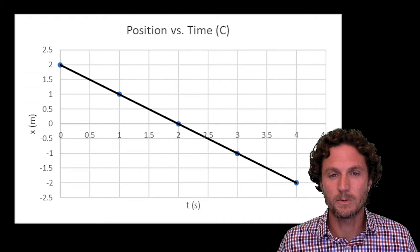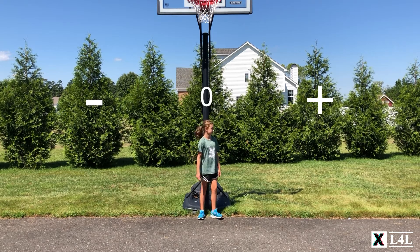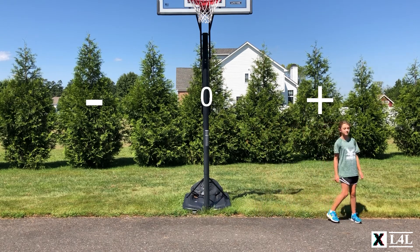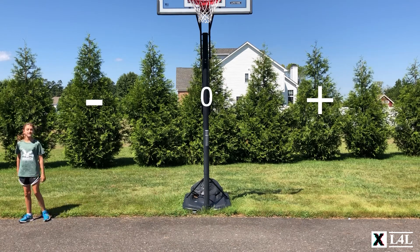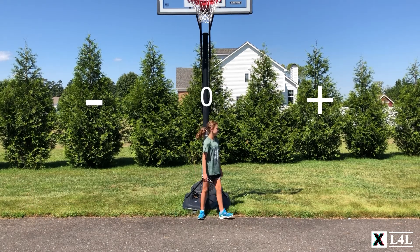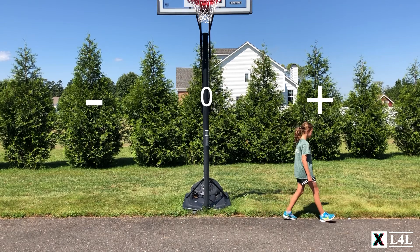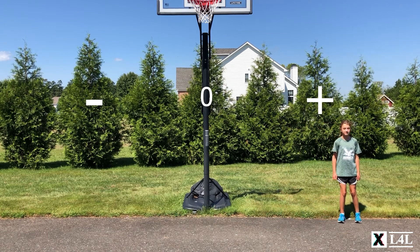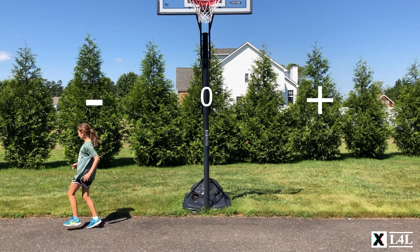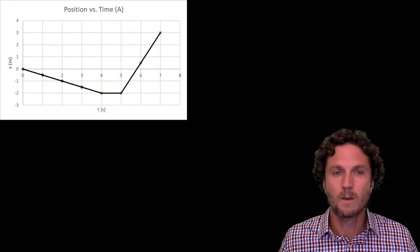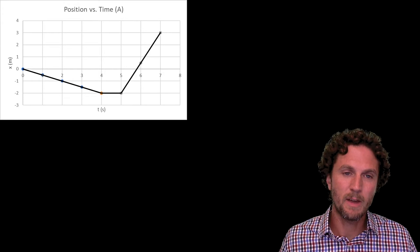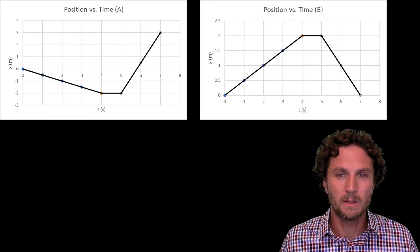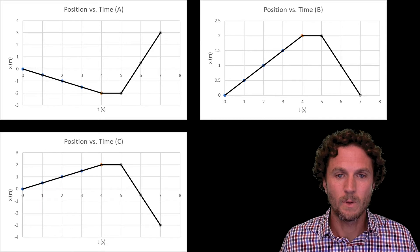Let's take a look at another example of some motion. Was Madison's motion best represented by this position versus time graph A, graph B, or graph C?